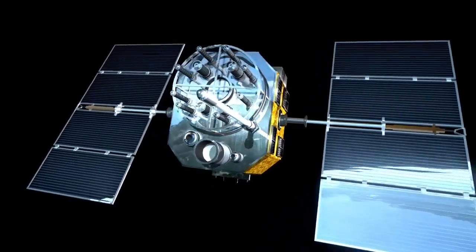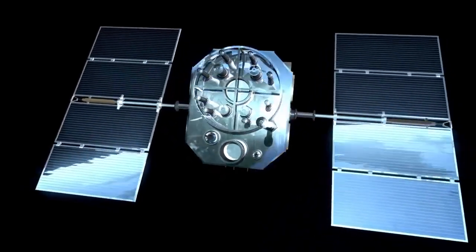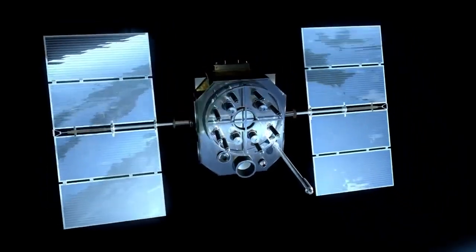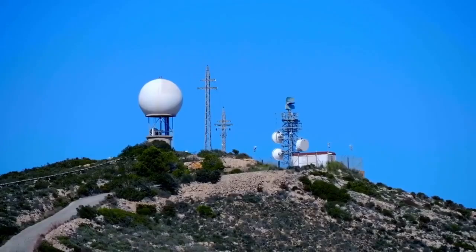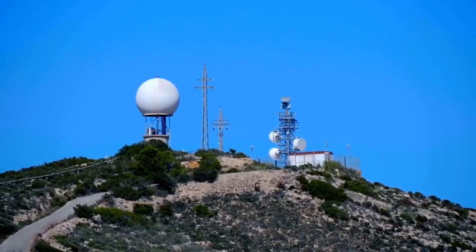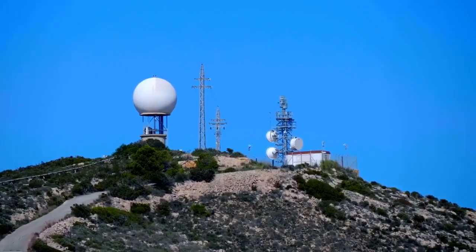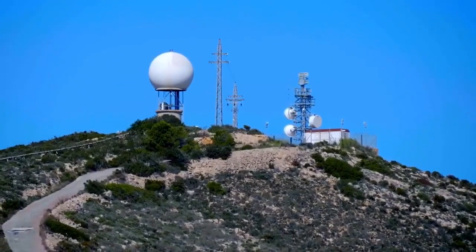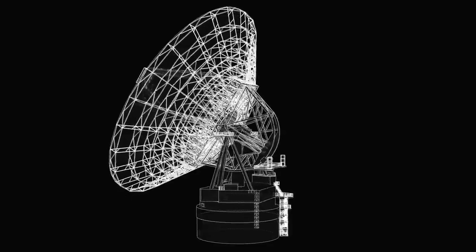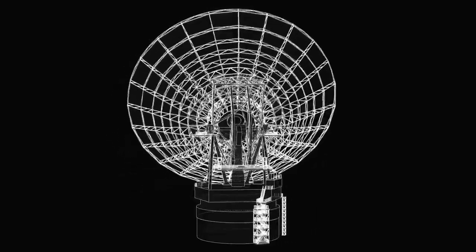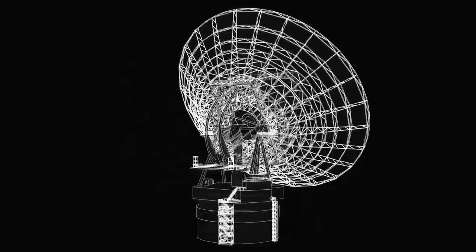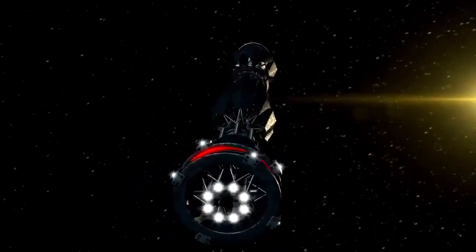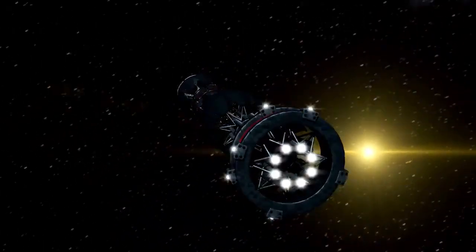In October 2024, Voyager 1 experienced a communication anomaly when it unexpectedly ceased sending data via its primary X-band transmitter, which operates at higher power and provides more detailed telemetry. Engineers detected a faint signal from the spacecraft using the backup S-band transmitter, which consumes less power but has a weaker signal strength. This transmitter had not been in use for 43 years, and its activation likely resulted from the spacecraft's automated fault protection system, designed to conserve energy and ensure operational longevity.